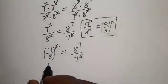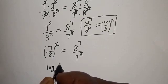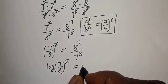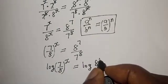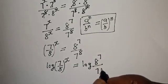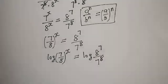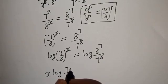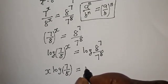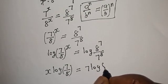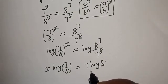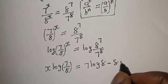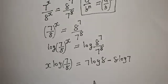Let's take the log of both sides of the equation. Log of 7 over 8 to the power of x is equal to log of 8 raised to power 7 divided by 7 raised to power 8. Then x times log of 7 over 8 is equal to 7 log 8.